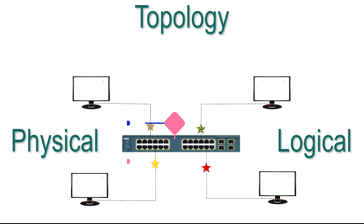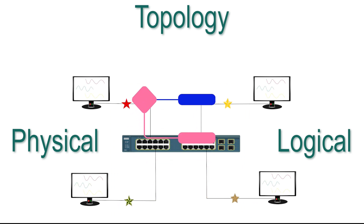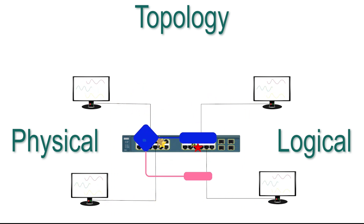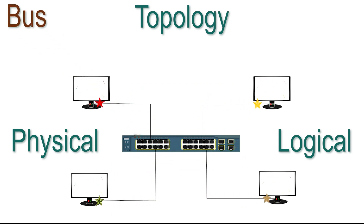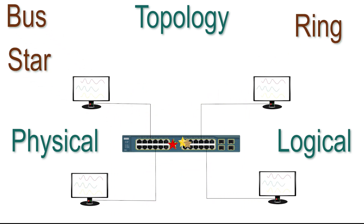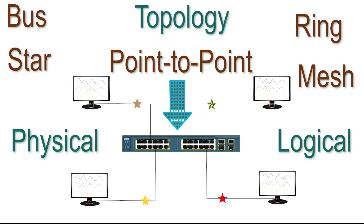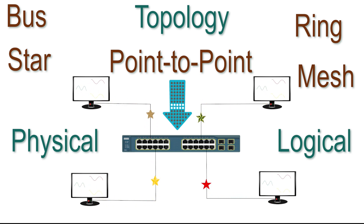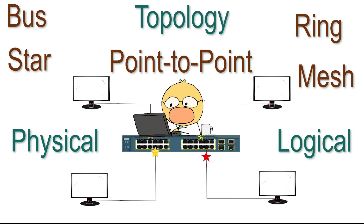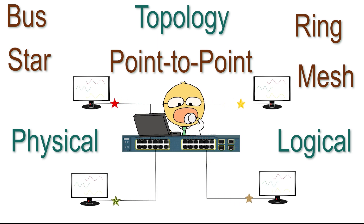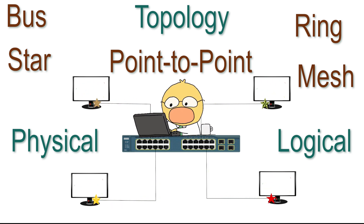Based on its layout, we can further classify a topology into bus, star, ring, mesh, and point-to-point. Each subtype arranges devices or moves data differently from others. In this video, we will explore each subtype and learn how it works with its advantages and disadvantages.